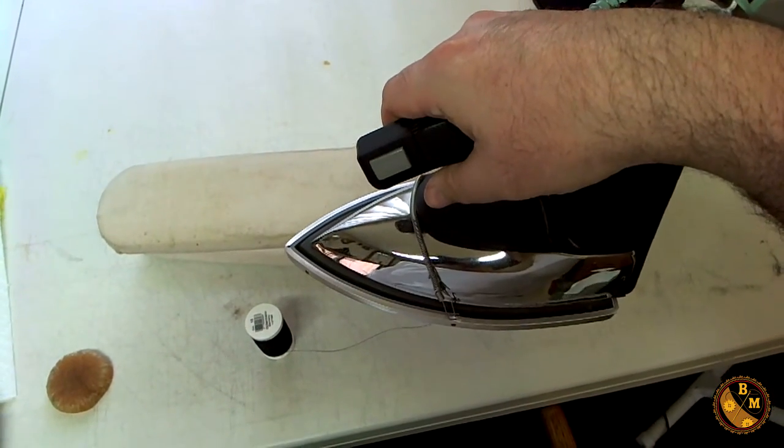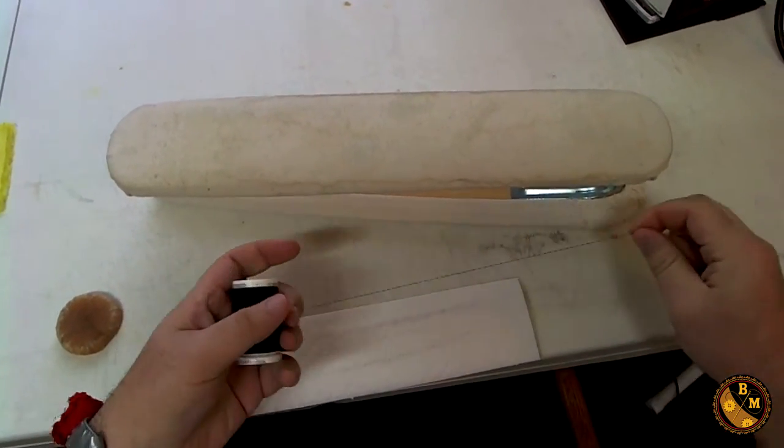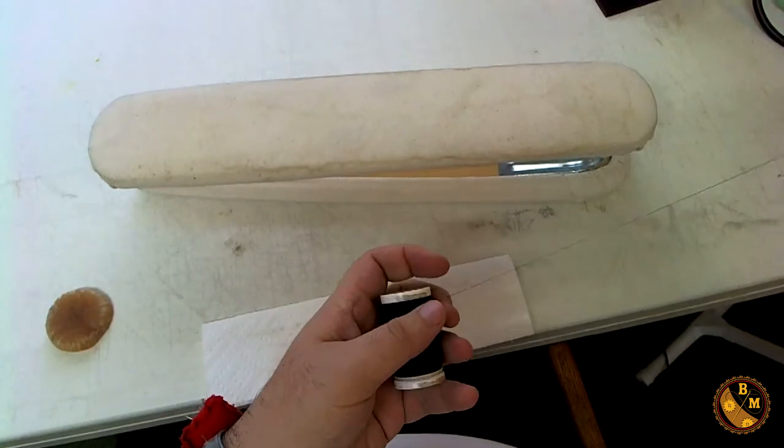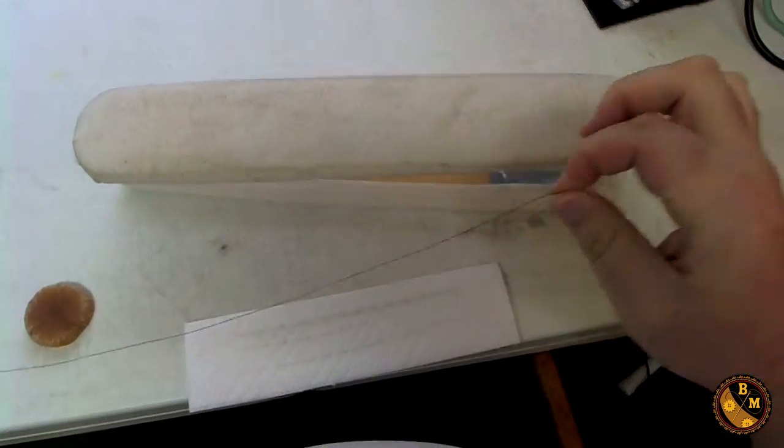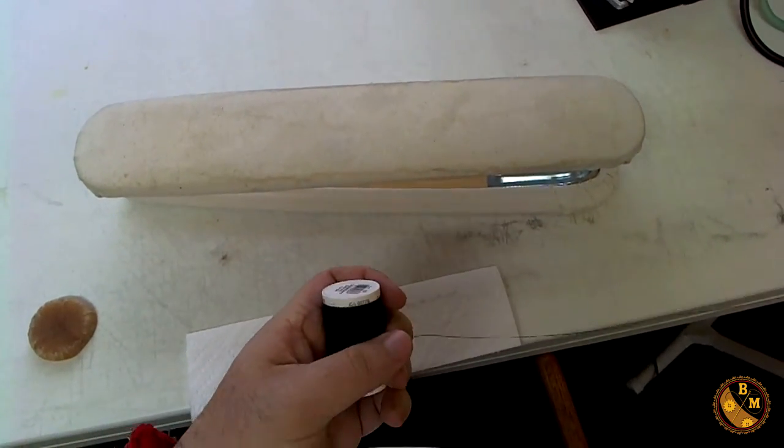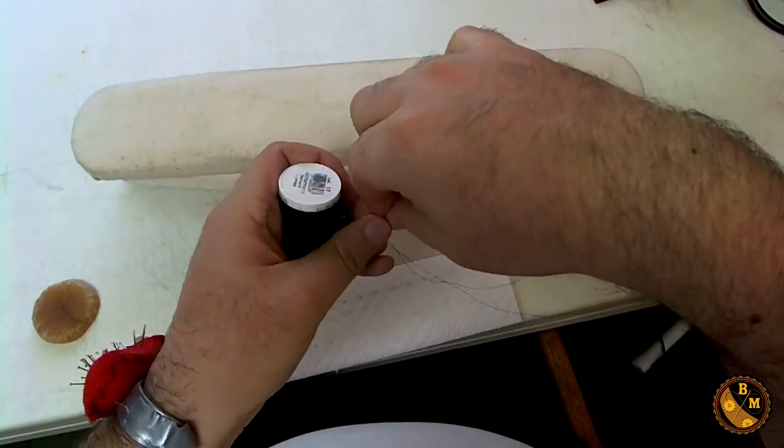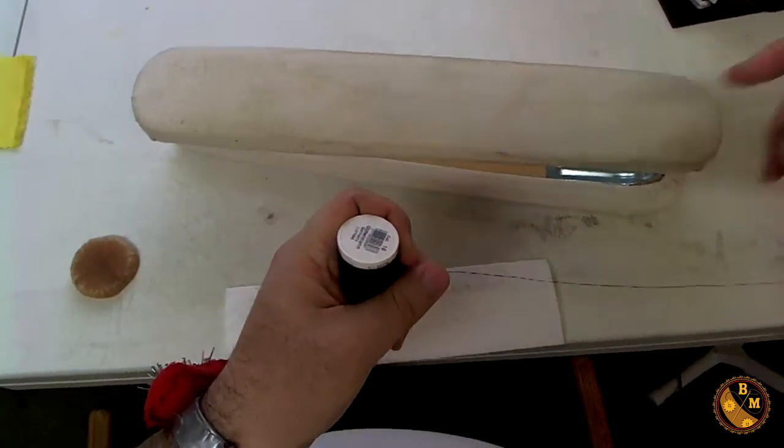We're going to be using the iron without steam, at least on a medium-high setting. First thing you want to do is get the right length of thread for your hand stitch. This is generally about an arm's length away because you'll be doubling the thread up on the needle, so it'll end up being half the size. You want it to be long enough for your stitch.